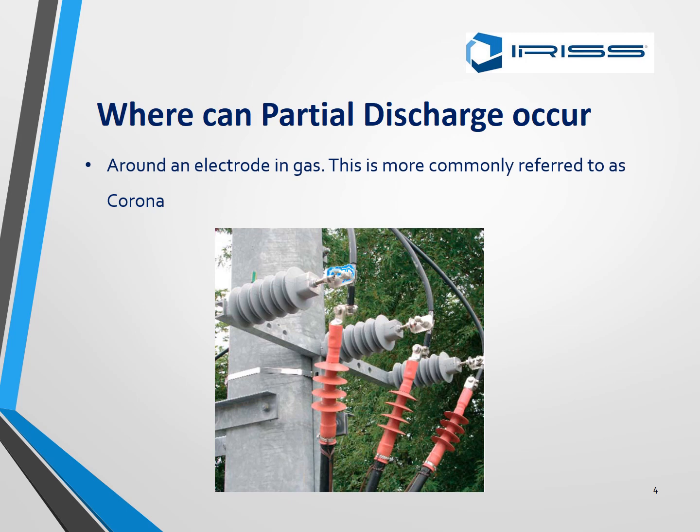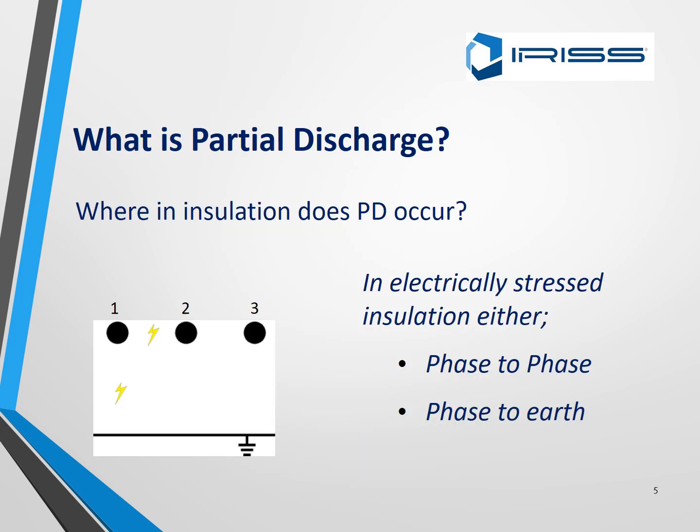Where does PD happen? PD can occur either phase-to-phase or phase-to-earth — in fact, anywhere we can find electrically stressed insulation due to a defect. What we're listening for is what we call in the trade corona.